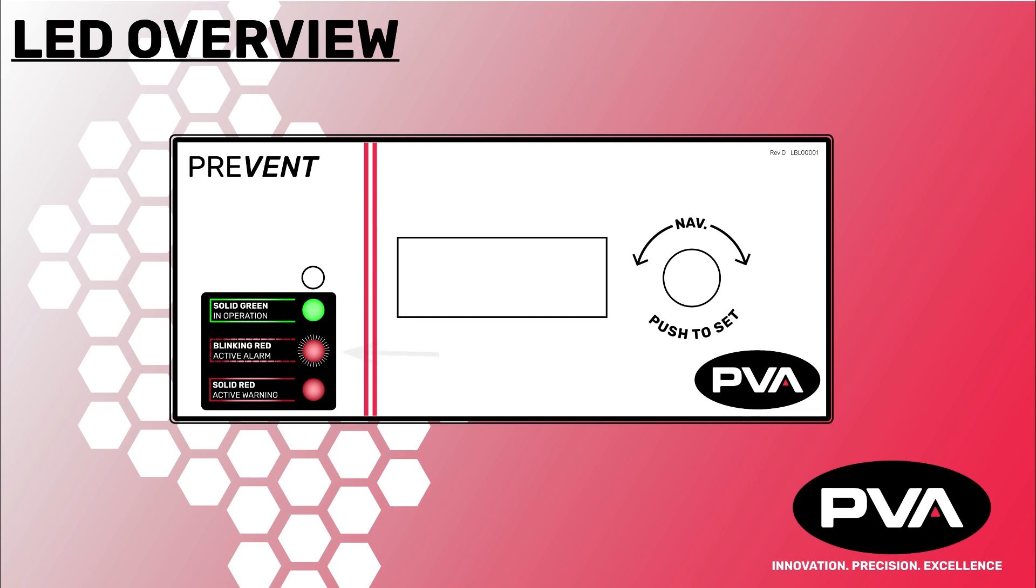If the LED button is blinking red, it will indicate there are active operational alarms. You will also hear an audible buzzer. If the LED button is solid red, it will indicate there are active operational warnings.